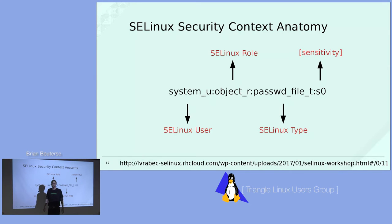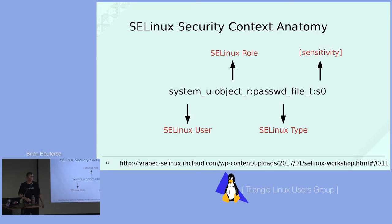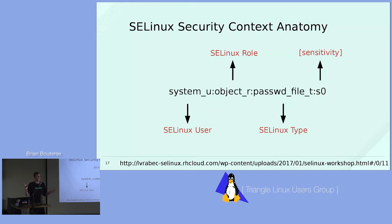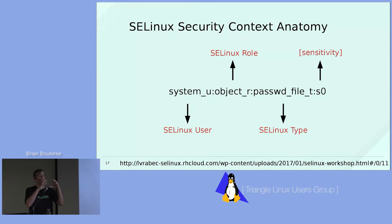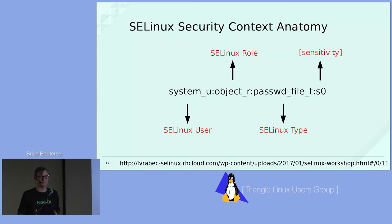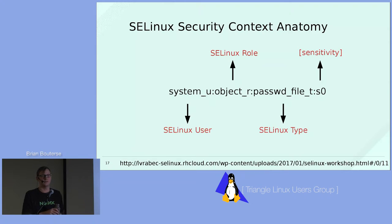There's also the sensitivity level. You'll hear about the MLS model — multi-level security — which defines rings of security like unclassified, secret, top secret, top secret compartmentalized. The whole idea is to prevent data from flowing from more secure areas to less secure ones. Most introductory resources talk about MLS a lot, but you're really not going to do MLS unless you work in a very specialized environment. For most usage, the SELinux type is what matters most.